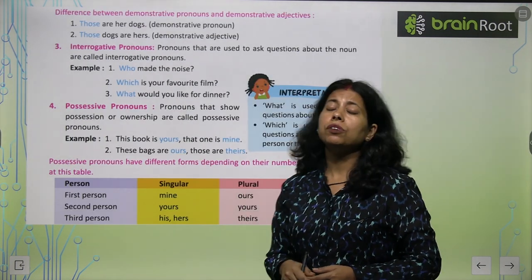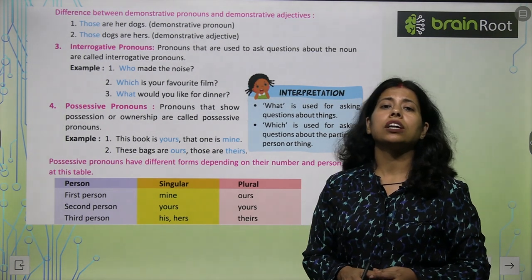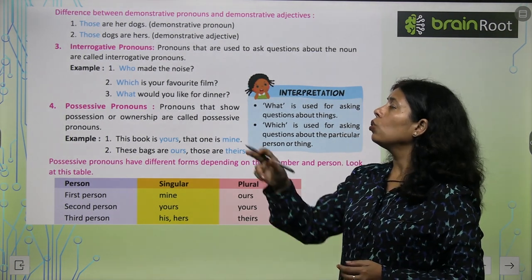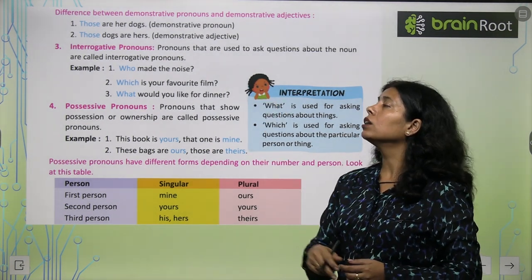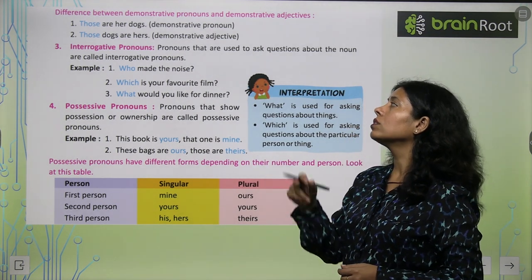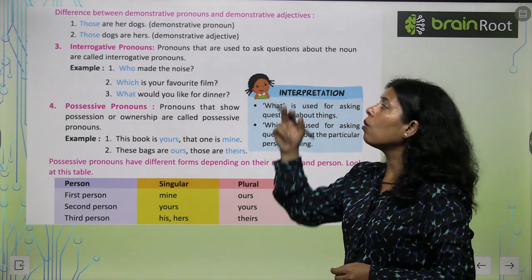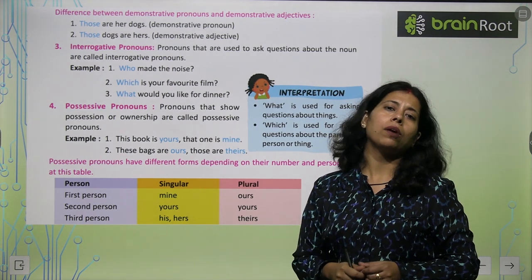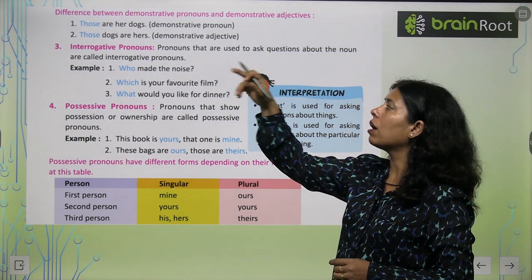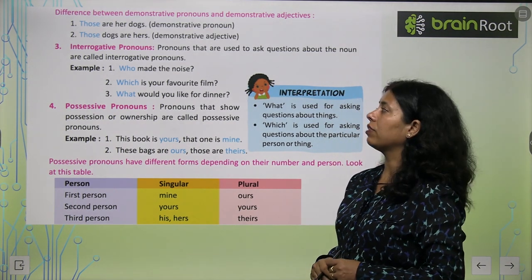The difference between demonstrative pronoun and demonstrative adjective: Those are her dogs — here those is a demonstrative pronoun. Those dogs are hers — here those is a demonstrative adjective.